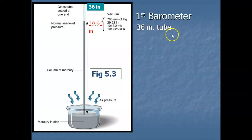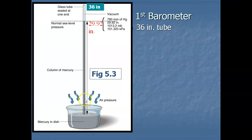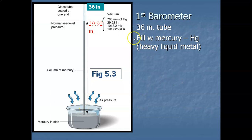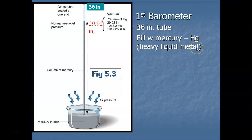To understand the weight of the atmosphere, we start with a test tube that's three feet long, or 36 inches tall — 36 to zero, with one-inch increments. We fill that test tube completely with mercury, abbreviated Hg. Mercury is a heavy liquid metal with good expansion and contraction properties that work well in a thermometer or barometer.